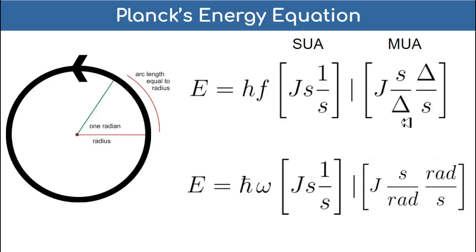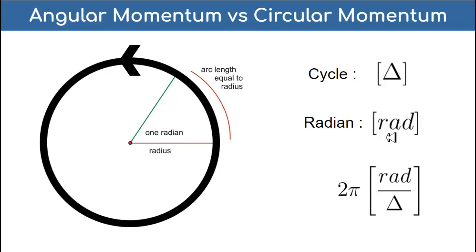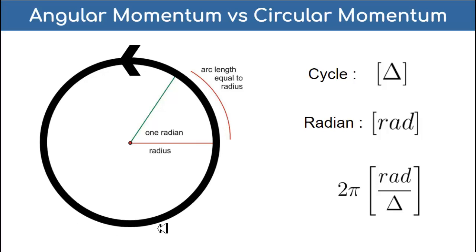I want to stick with the domain of the cycle, because one complete cycle makes logical sense - quantization is on a per-cycle basis and not on the arbitrary per-radian basis. If we're talking about quantization, it's important to stick with the domain of the cycle. In order to convert from angular momentum to circular momentum, we convert from the domain of the radian to the domain of the cycle using 2 pi, which has units radians per cycle. There are 2 pi radians in one cycle - 6.28 radians along the circle - so this is our conversion factor.